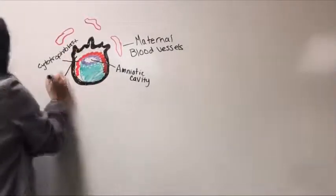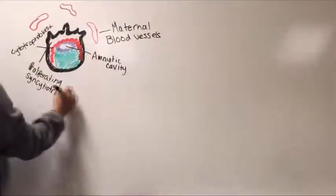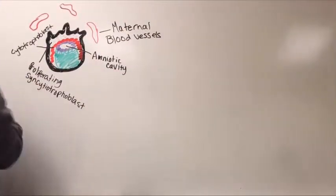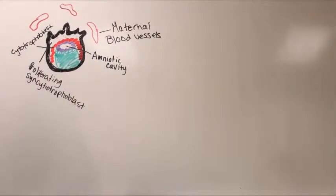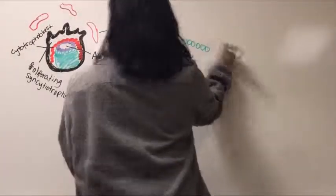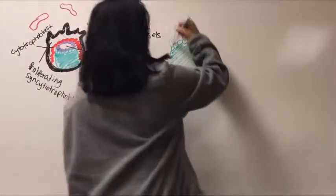The functions of the placenta are the transfer of nutrients, gas exchange, and transfer of metabolic waste. The embryonic membranes that form are the amnion, which develops within cells of the epiblast.